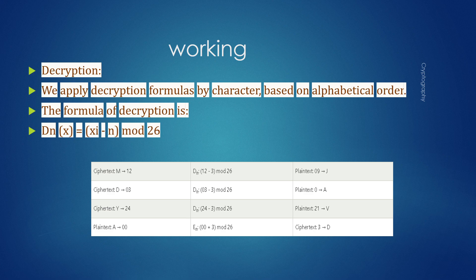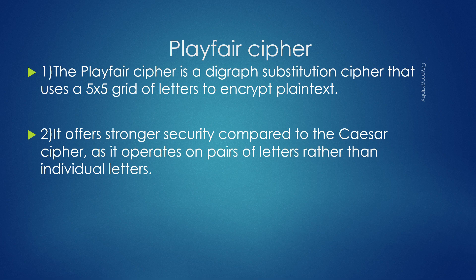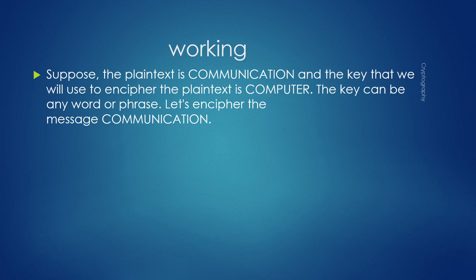The Playfair cipher is a digraph substitution cipher that uses a 5×5 grid of letters to encrypt the plaintext. It offers stronger security compared to the Caesar cipher, as it operates on pairs of letters rather than individual letters. However, it has vulnerabilities such as difficulty handling certain characters and maintaining key secrecy.